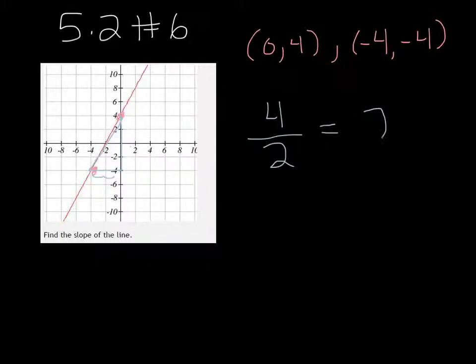Now we want to think about if it's positive or negative. Since the line is going up from left to right, it is indeed a positive 2. We could also use our slope formula.